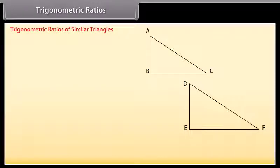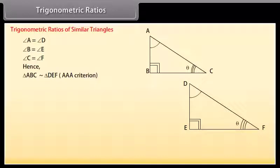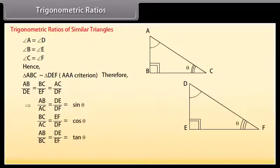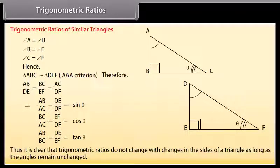Trigonometric ratios of similar triangles: Consider two triangles ABC and DEF, where angle A equals angle D, angle B equals angle E, and angle C equals angle F. Hence triangle ABC is similar to triangle DEF by the AAA criterion of similarity. Therefore the corresponding sides of the two triangles are proportional. Thus it is clear that trigonometric ratios do not change with changes in the sides of a triangle, as long as the angles remain unchanged.